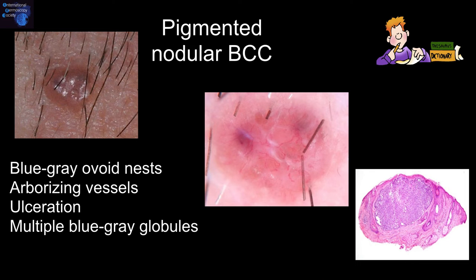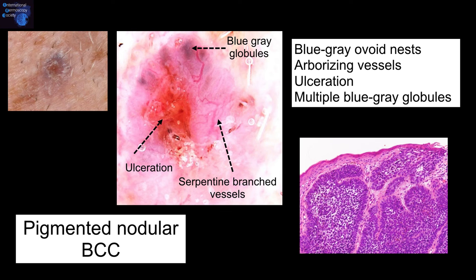For pigmented nodular basal cell carcinomas, we look for the following features: blue-gray ovoid nest, arborizing vessels, ulceration, and multiple blue-gray globules. Here is an example demonstrating a blue-gray globule, areas of ulceration, and serpentine branch vessels.